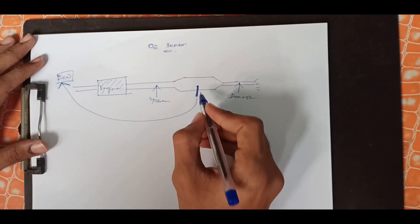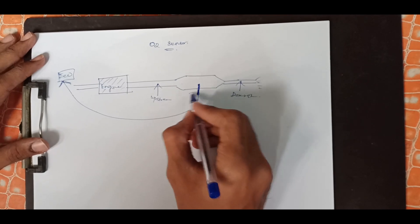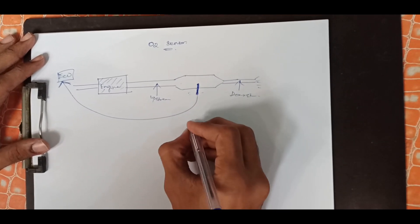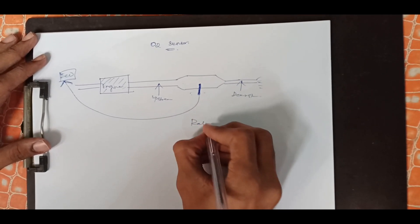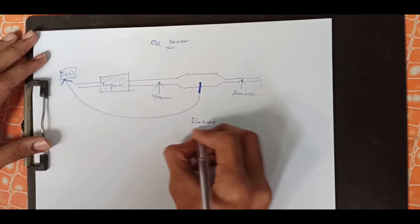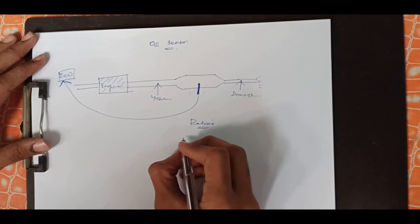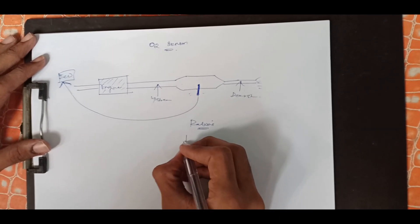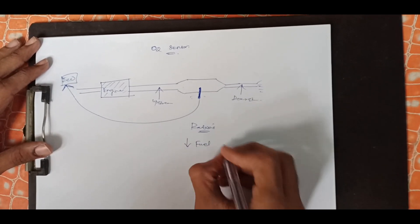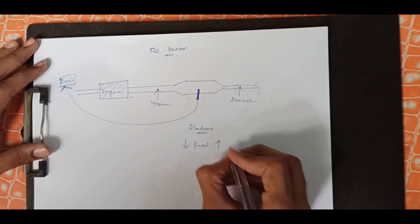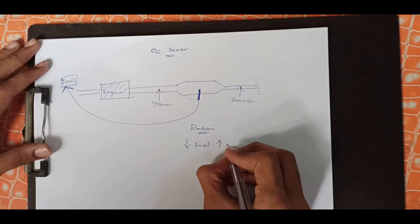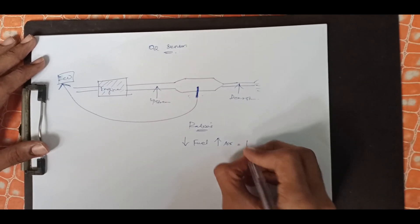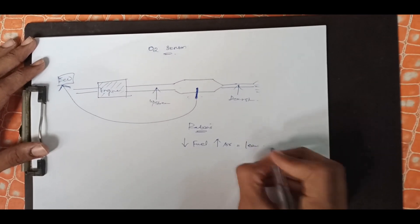First, we will see the working mechanism. Let's talk about the ratio of air and fuel. First, let's talk about the ratio. Less fuel and more amount of air — if you look at the lean mixture.